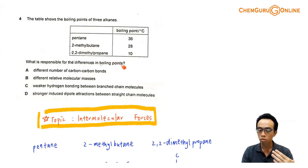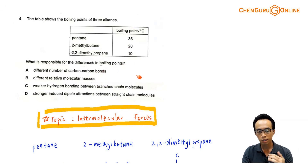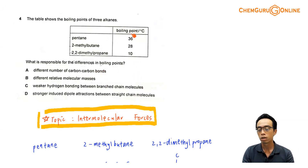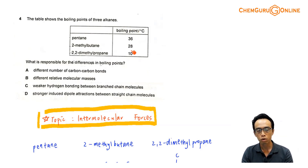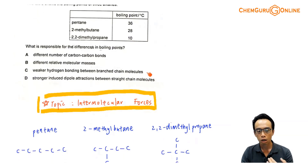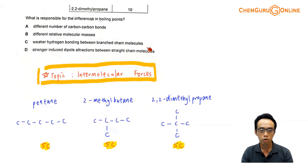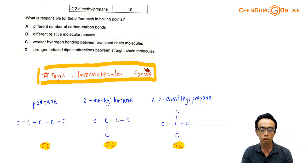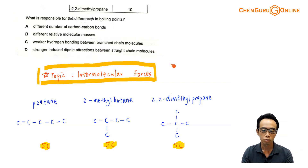We will run through the options subsequently, but let us talk about the concept we need to handle this question. If we want to compare boiling points for alkanes, the topic we should be focusing on is intermolecular forces, comparing the intermolecular forces of simple molecules.